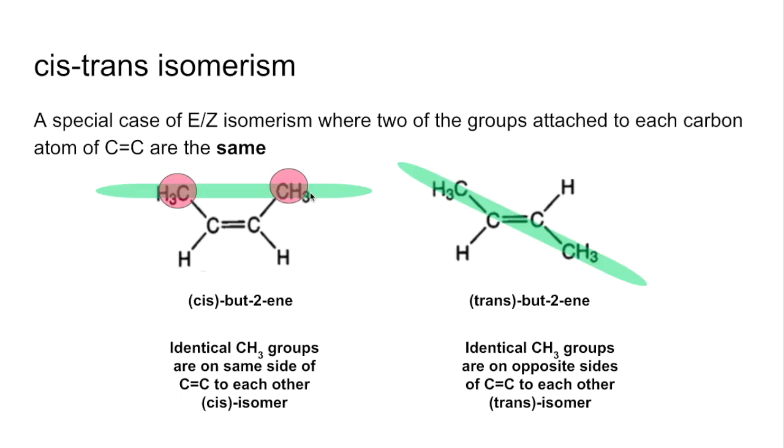When the priority groups are on the same side of the double bond, that's what we call the Z isomer. So this would be Z-but-2-ene, and we also know now that it's cis-but-2-ene as well. When the priority groups are on opposite sides of the double bond, it's the E isomer.